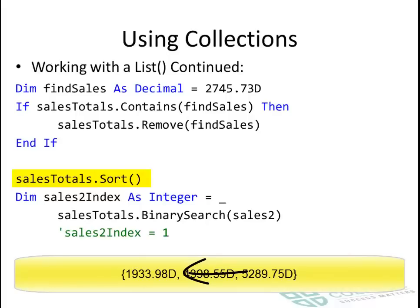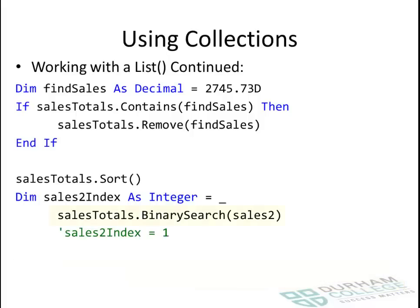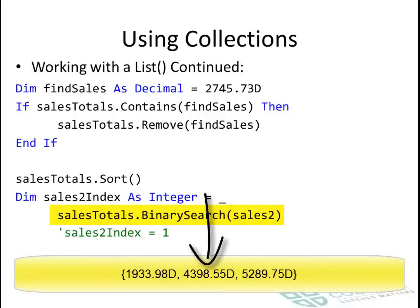Because of the sort, the smallest value is going to go to the beginning. If you were actually looking at that list right now, you would see the first value is 1,933.98, followed by 4,398.55, and then 5,289.75. So when we do a binary search for sales 2, which currently has the value of 4,398.55, it's going to return the index of 1 — that's the second element.